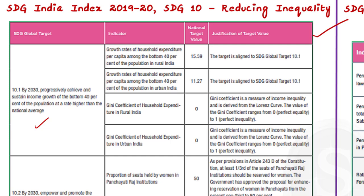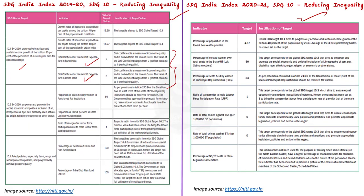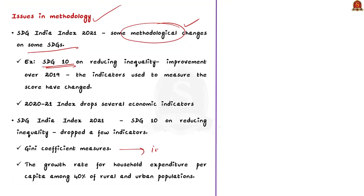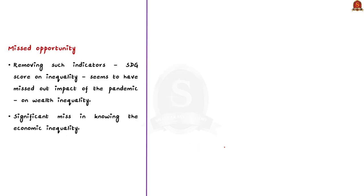The Gini coefficient, which was removed from the 2021 edition, measures income inequality. By removing such major indicators the score has improved, but it reflects a flaw in the methodology and does not reflect reality. The sustainable development score on inequality is very important because it can capture the impact of the pandemic on wealth inequality and assess economic inequality in society. By removing these indicators, we have missed the opportunity to measure such inequalities.